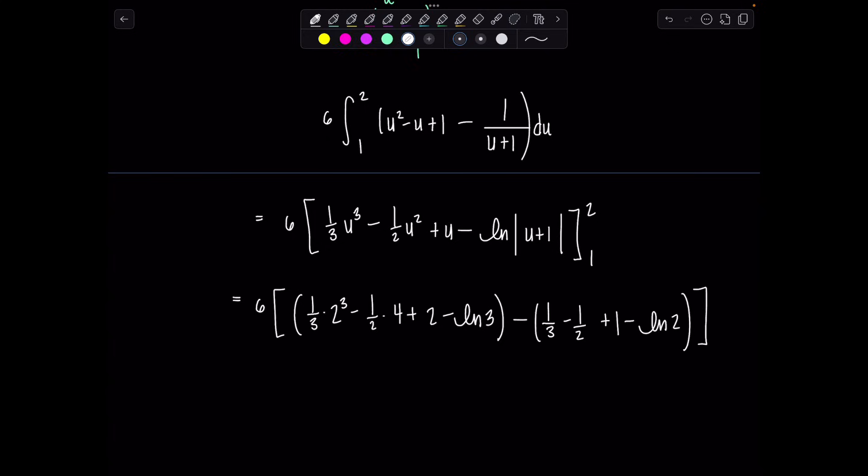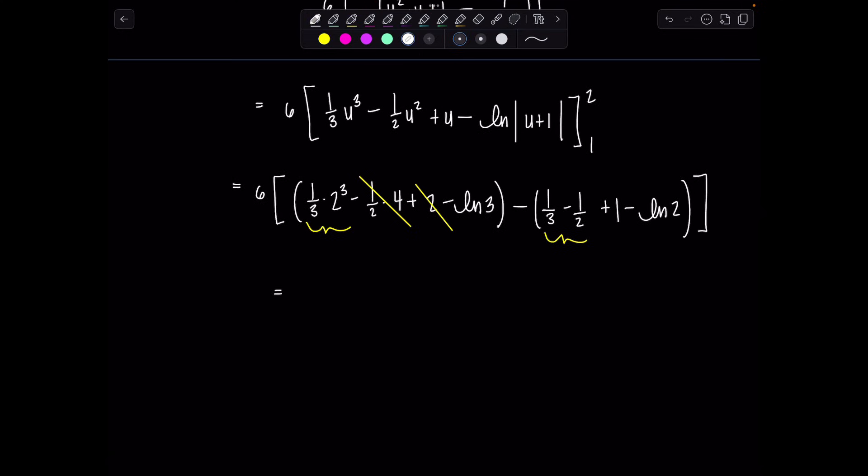Now notice this is negative 2, positive 2. Those will cancel out. And this is 8/3. And then over here, this is going to give me a 1/6. So altogether, I'll just cut to the chase. This is 6 times 11/6 minus ln of 3 plus ln of 2. And then we can use our log properties, combine that. And then now, let's distribute that 6 back through because it'll cancel so nicely with 11/6. Why would we not? So we'll get 11. And then remember, this becomes ln 2/3 positive. So plus 6 ln 2/3.